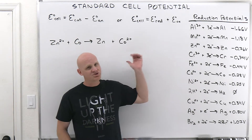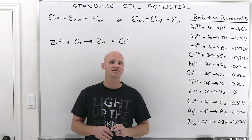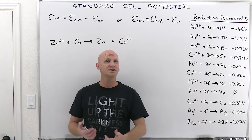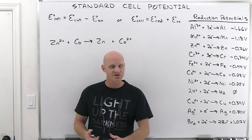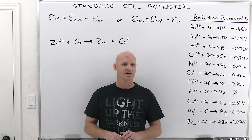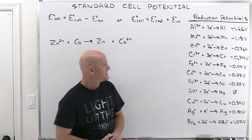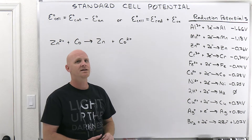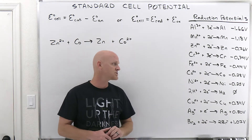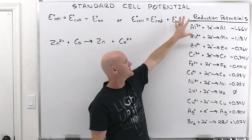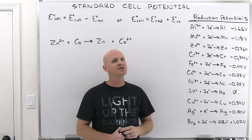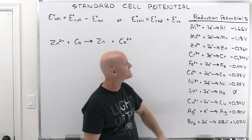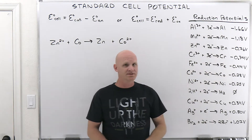Standard cell potential — we talked about this in the last lesson. It's also called the EMF, the electron motive force, or the E-cell, or the cell potential, or the voltage. All those mean the same thing, and it's measured in volts. We have a standard way of calculating this, and the tool we use is called a table of standard reduction potentials, which gives a reduction half reaction and assigns a voltage value to it.